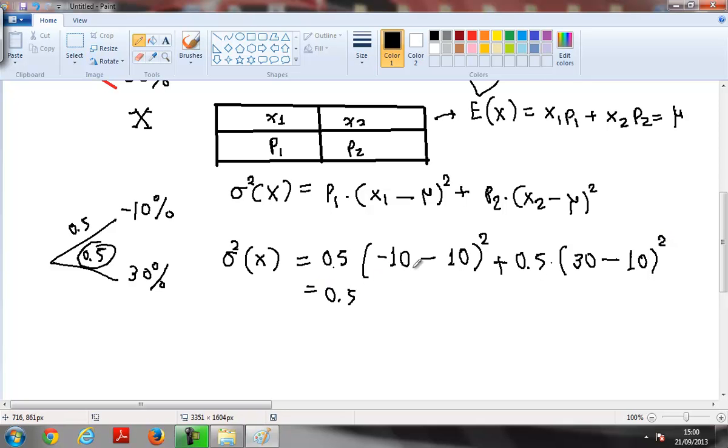If you substitute here, you have 0.5 times 400 plus 0.5 times 400, half plus half, 400. It means that sigma of x is the square root of 400 and this is 20. So that's the standard deviation of the rate of return.